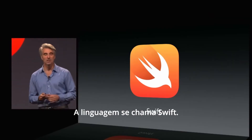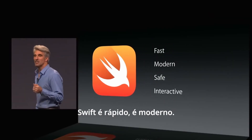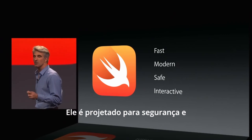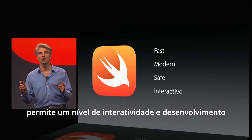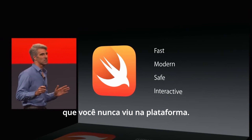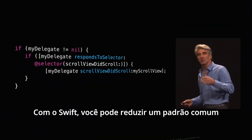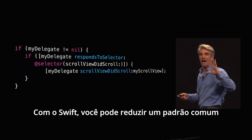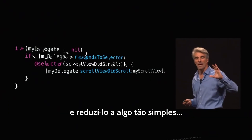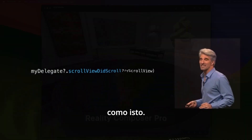The language is called Swift. Swift is fast. It is modern. It is designed for safety, and it enables a level of interactivity and development that you've never seen on the platform. With Swift, you're able to reduce a common pattern that you might see in your Objective-C code, and reduce it to something as simple as this.